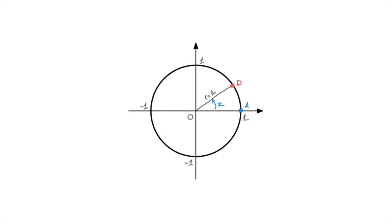Any angle that we measure on this unit circle will be measured from the radius OA, which I'm highlighting in blue. In other words, when we let the point P move around the unit circle, its starting point is always at point A, and we measure the angle that its radius OP makes with radius OA. Angles measured around this unit circle are positive if we move in an anticlockwise direction, and negative if we move clockwise.